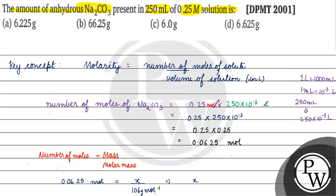So x will be equal to 0.0625 moles into 106 grams per mole. Mole and mole will cancel, giving 6.625 grams. The correct answer for this question is option D. I hope you understood it well — thank you and all the best!